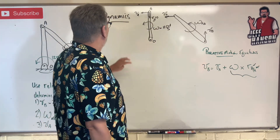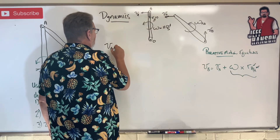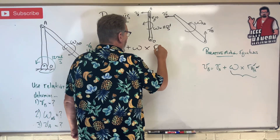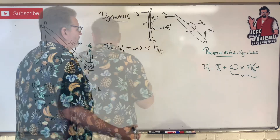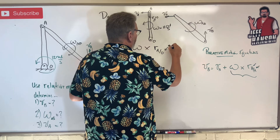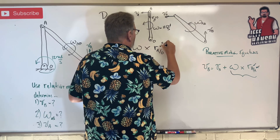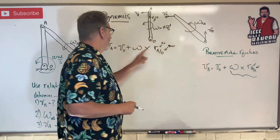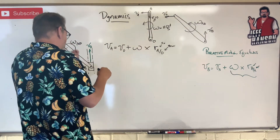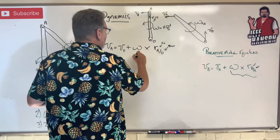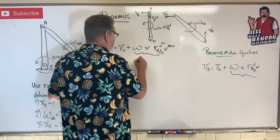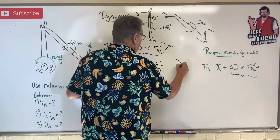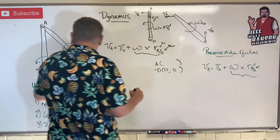Step one: let's work on piece one by itself. The equation is Va equals V_O plus omega cross r_{A/O}. Remember, this goes start to finish — O is the start, A is the finish. So the subscript order matches: r_{A/O} means A minus O. Let's write that position vector. The origin O is easy — let's just make that zero.